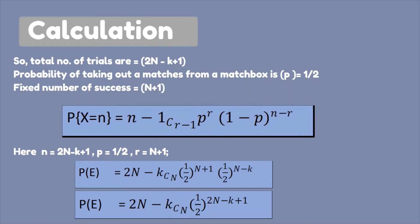So that to find probability of exactly k matchbox remains in either of box. So now we have to find probability such that there are 2N minus k trials in which N plus 1 are fixed number of success for that which is a definition of negative binomial distribution. Therefore, we use negative binomial distribution which have probability mass function as P{X=n} equals to n minus 1 choose r minus 1, p to the power r, 1 minus p to the power n minus r.